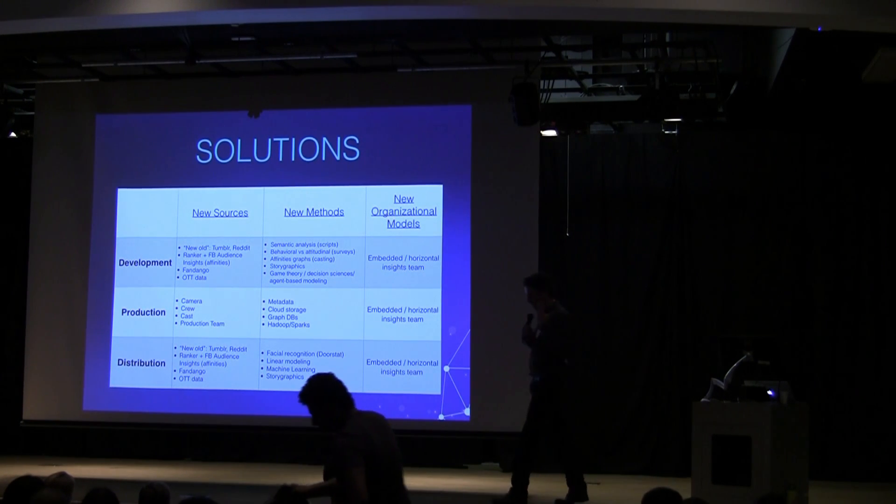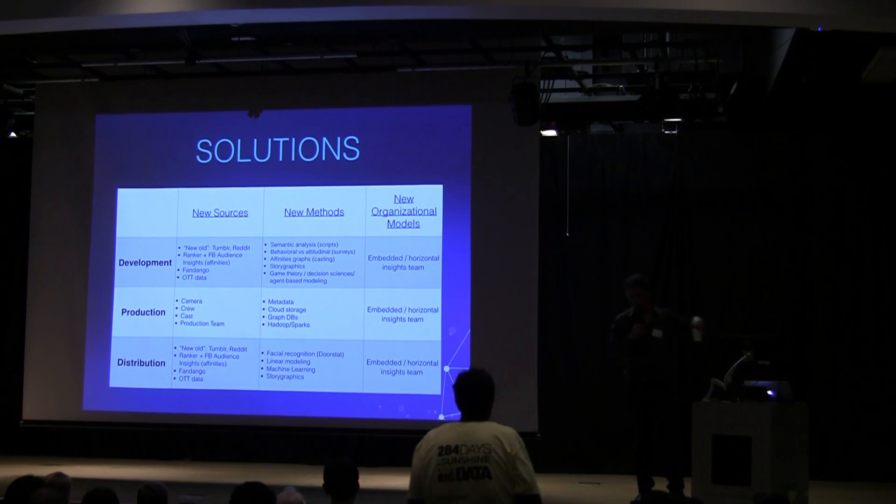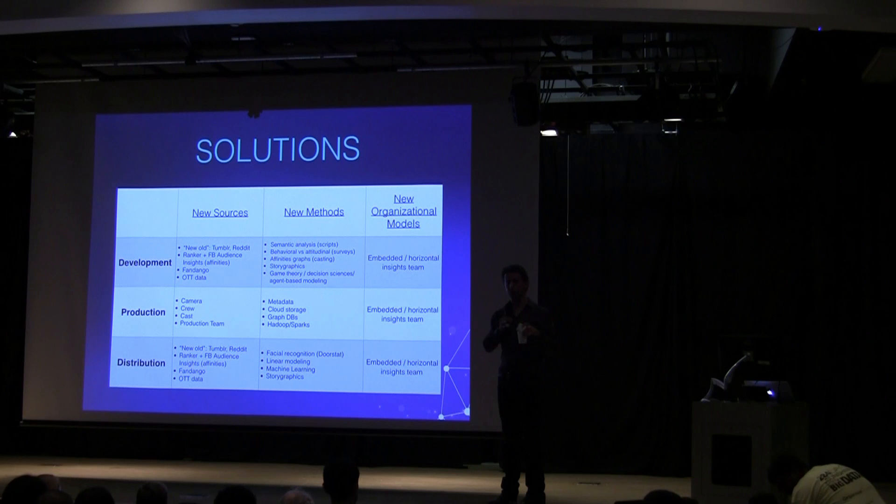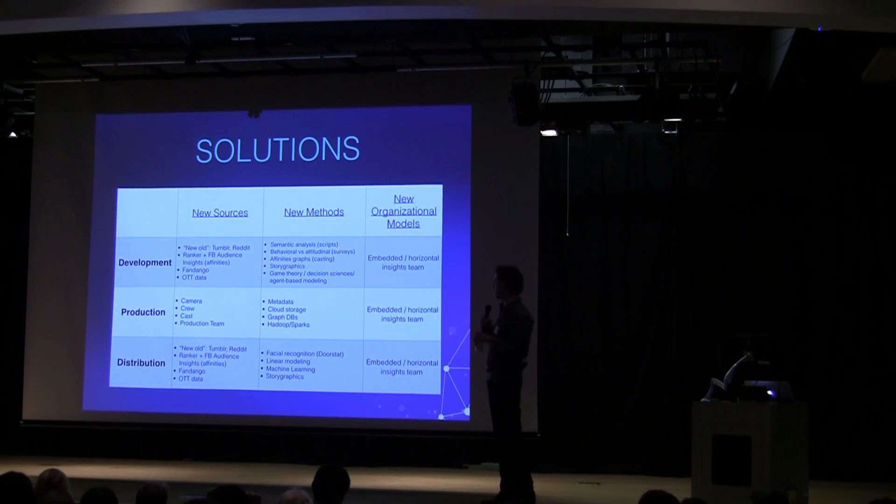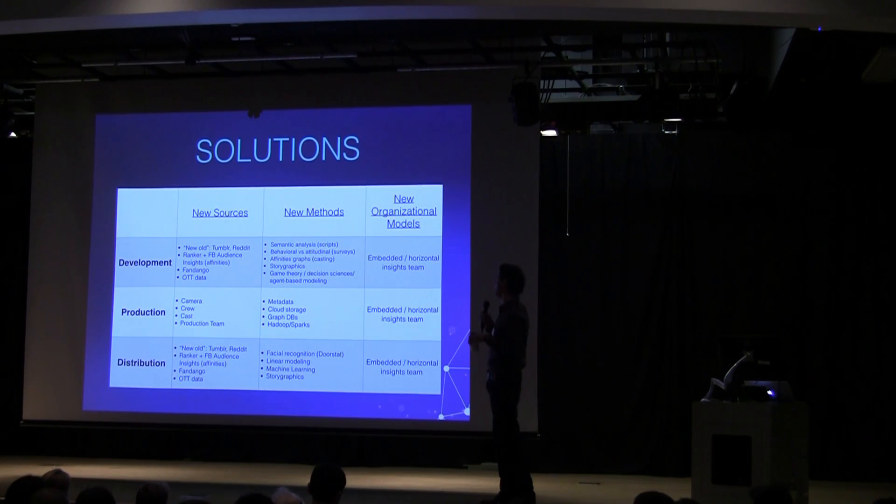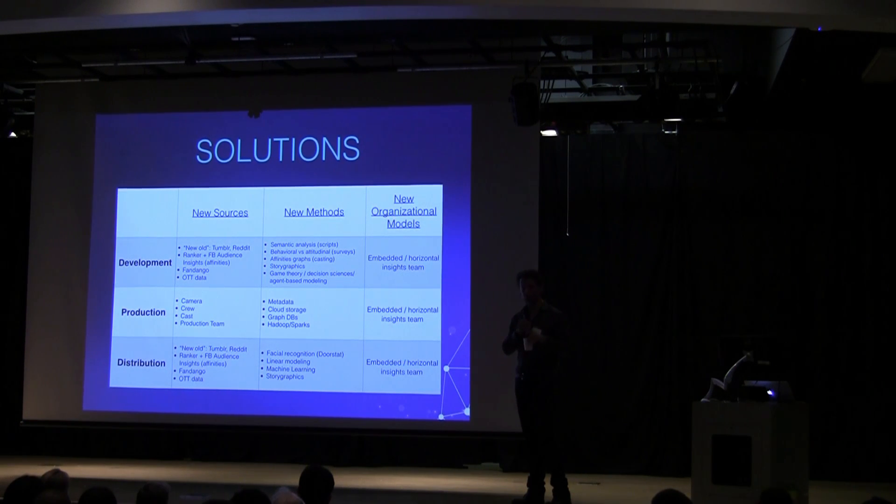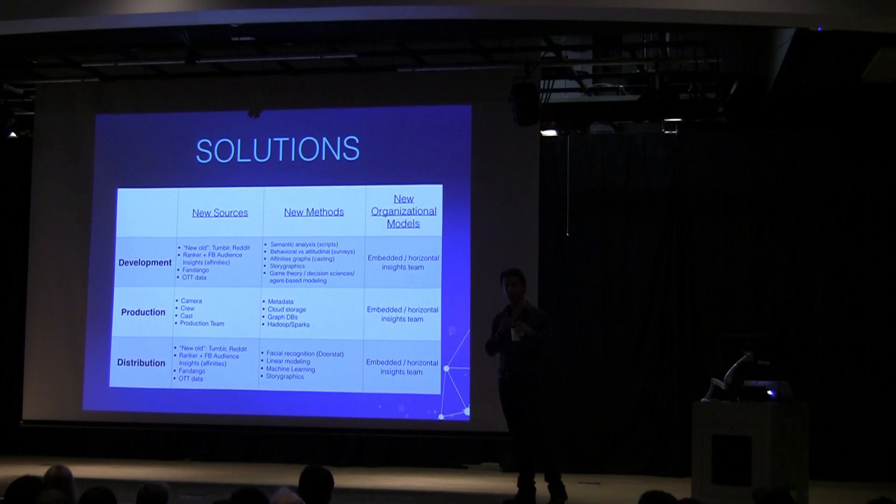Hollywood isn't the, it's a little bit late to the data and analytics game, but it's catching up really fast. And what we're doing at ETC is we talk to the CTOs of all the studios, so we have a very good handle on who's doing them live. So, I made this sort of matrix. There's a lot of push for new sources of data, new methods, and new organizational models around data. And on the left, you see the rows are the operational moments in studio value chain. It's development, production, distribution. So, going from left to right, in development is the moment where you develop content, you figure out which script to buy, which director, which talent to attach, whether it's pre-production.